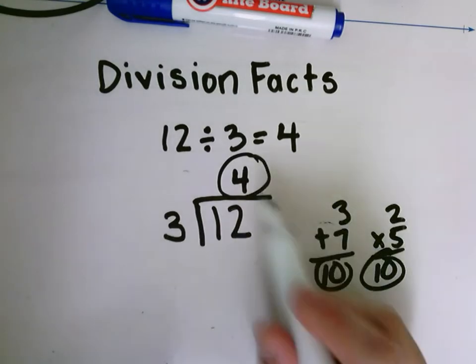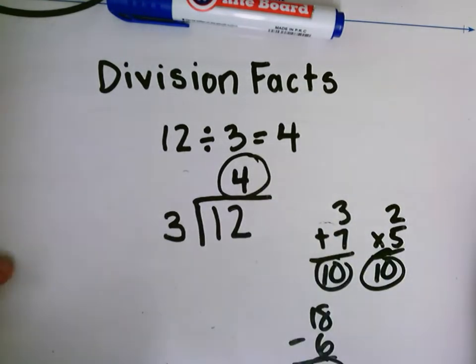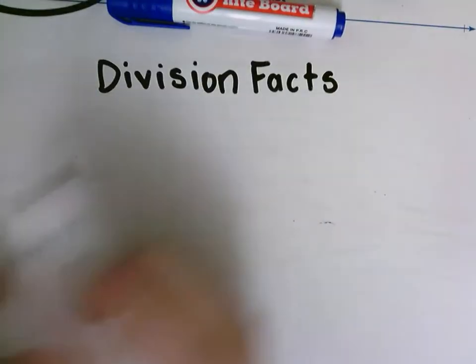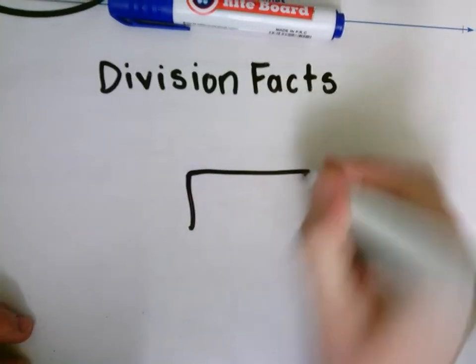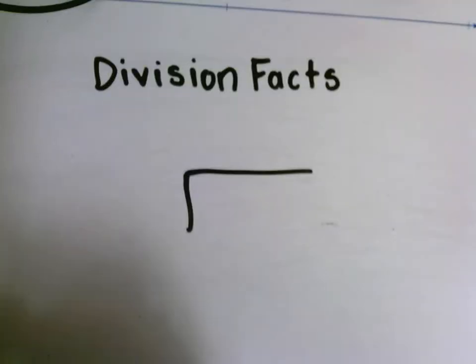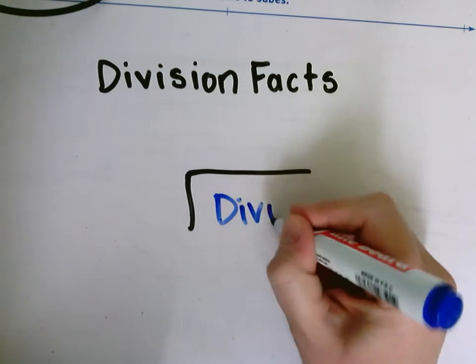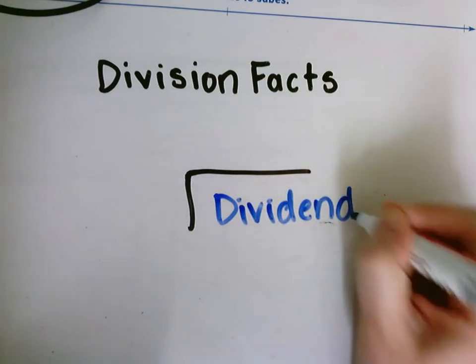So that's the one thing that's very different about division than the other problems that we do. We're going to be putting our answer on the top and these parts of our division problem all have different names. So let's talk about what they are. This is our division box, our long division symbol.